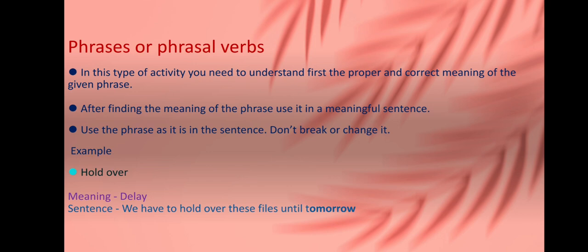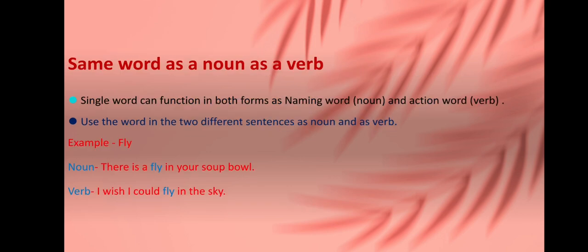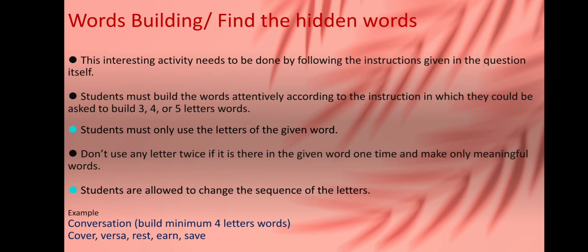Now, same word as a noun and as a verb. A single word can function in both forms as noun and as a verb. For example, let's suppose use the word in two different sentences as noun and as a verb. They may ask you in the examination, and let's suppose the word is fly. So as a noun: there's a fly in my soup. And verb: I wish I could fly in the sky.